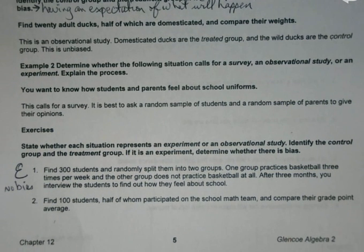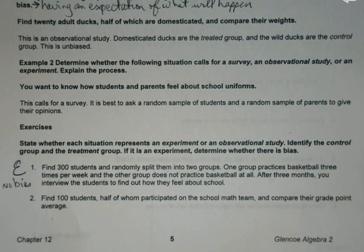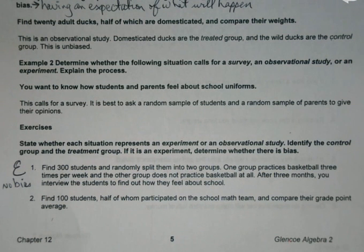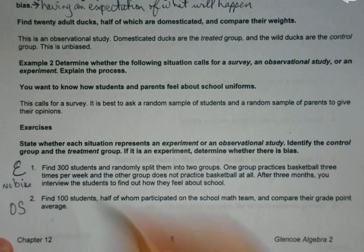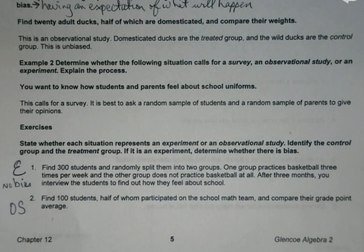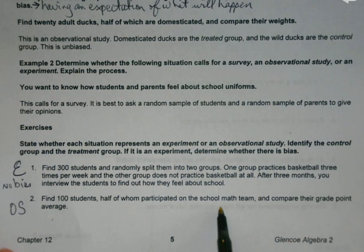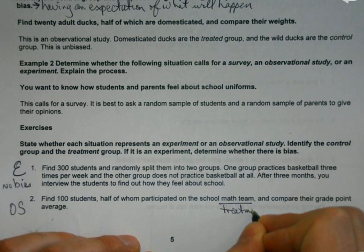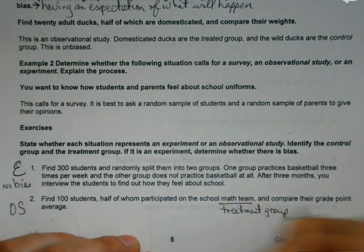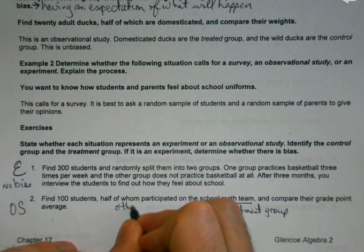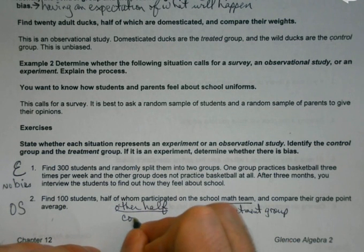Problem two: 100 students, half participated on the math team, and we compare GPAs. Is it an experiment or observational study? Observational study — because we didn't say we're forcing half of them to be on the math team. We just said half are on the math team and half aren't. Now, identify the control and treatment group. The students on the math team would be the treatment group, and the students not on the math team would be the control group.